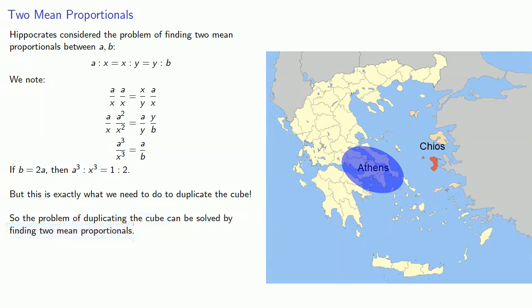Of course, he didn't have any idea of how to solve this problem of inserting two mean proportionals, but it did offer two methods of attack on the same problem.